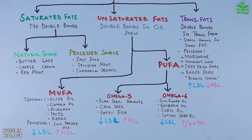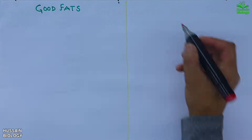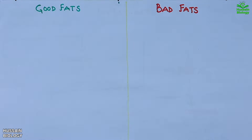To summarize: good fats include MUFAs and omega-3 PUFAs; neutral to cautious fats are saturated fats from natural sources, which should be consumed in moderation; and bad fats are trans fats and processed saturated fats, which should be avoided as much as possible. Now let's compare these fats side by side and discuss chemical structure, physical properties, lipoprotein effects, clinical effects, and metabolic pathway impacts.